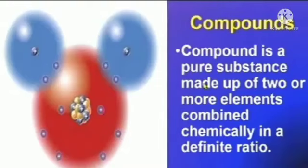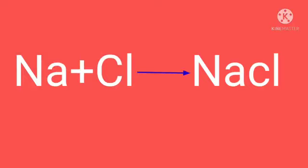Coal is always made up of carbon. Let us define compounds. A compound is a pure substance made up of two or more elements combined chemically in a definite ratio. For example, Na plus Cl gives rise to NaCl. NaCl is a compound.